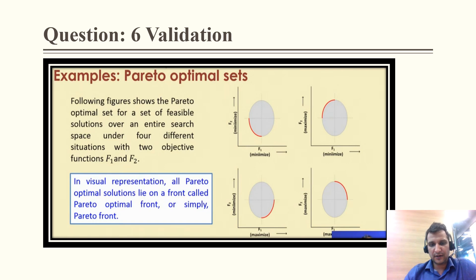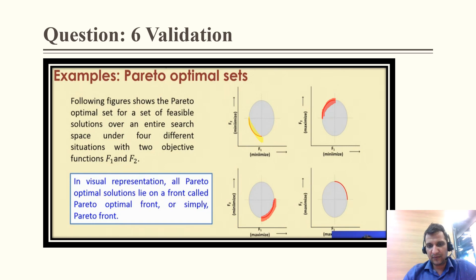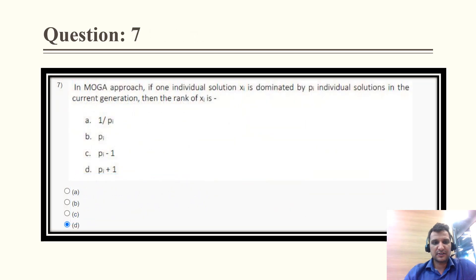The validation: there are four types of Pareto optimal fronts. In the minimize-minimize case, we consider the front shown. When f1 is minimized and f2 is maximized, we consider a different front. When f2 is minimized and f1 is maximized, we consider yet another front. As per this representation, the correct Pareto optimal front is CD.